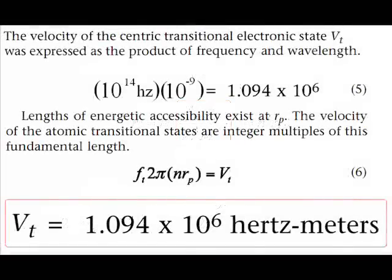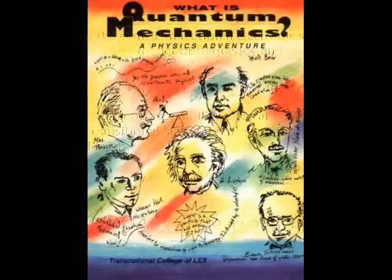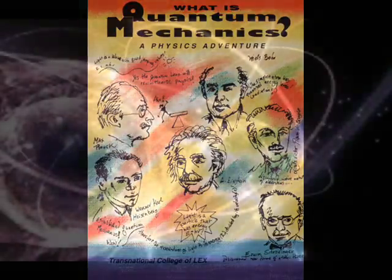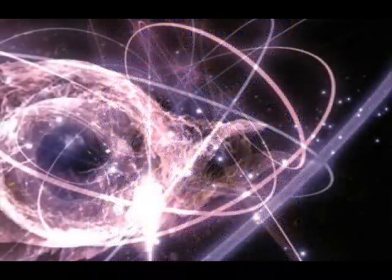I've been wondering about this velocity for a long time. Then when I was reading What is Quantum Mechanics by the Lex Foundation, it hit me. This velocity, one million meters per second, is the velocity of the transitional quantum state.